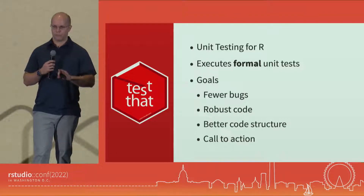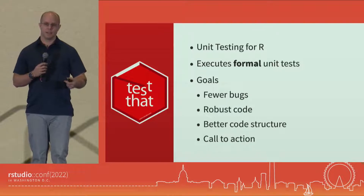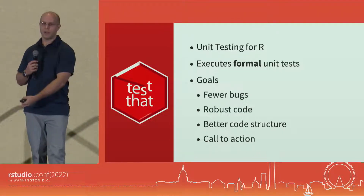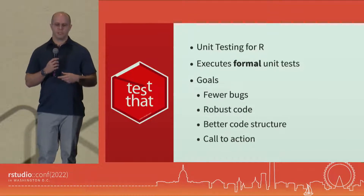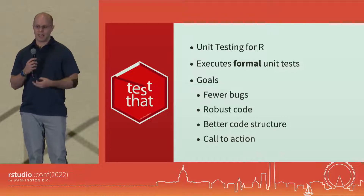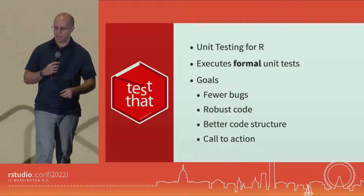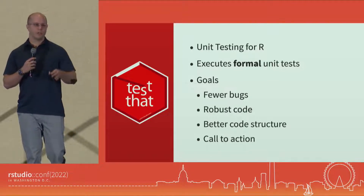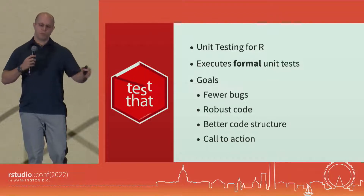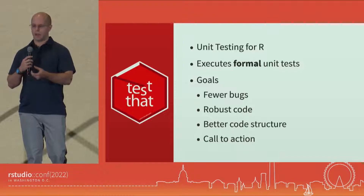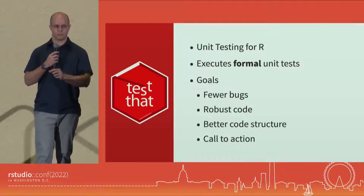Its goals are four main goals. Number one: fewer bugs — if you're constantly testing, things get broken less often. You can also have more robust code, because maybe you're testing for unexpected inputs like 'chicken fingers' — not something I'd automatically test manually. And if you have better code structure, breaking your functions down and testing each Lego piece, you can believe you have a strong, robust code structure at the end.